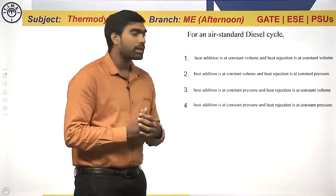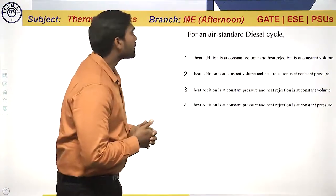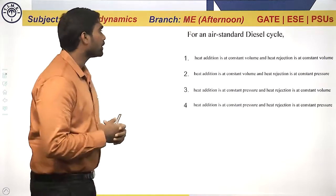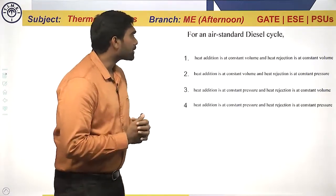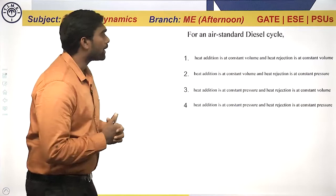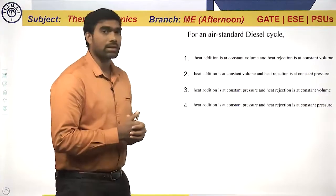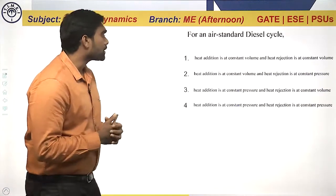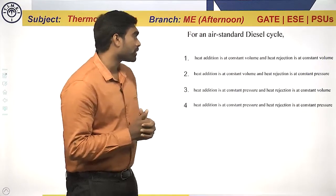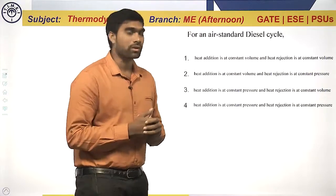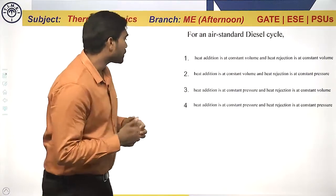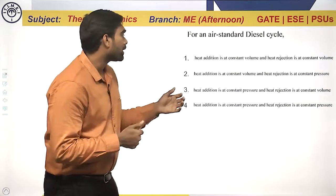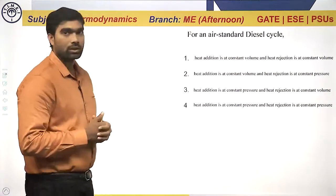Statement one: heat addition is at constant volume and heat rejection is at constant volume. Statement two: heat addition is at constant volume and heat rejection is at constant pressure. Statement three: heat addition is at constant pressure and heat rejection is at constant volume. Statement four: heat addition is at constant pressure and heat rejection is at constant pressure.